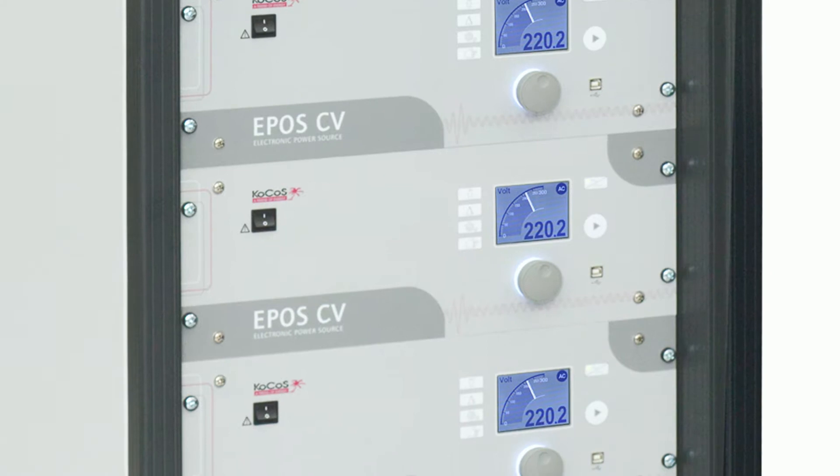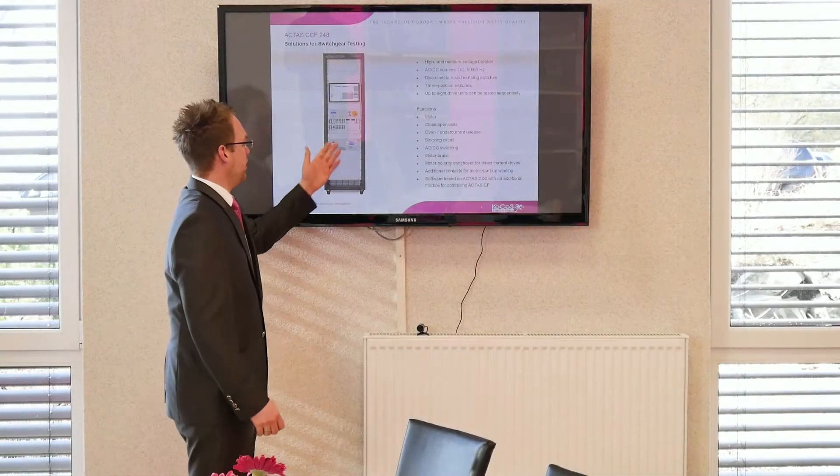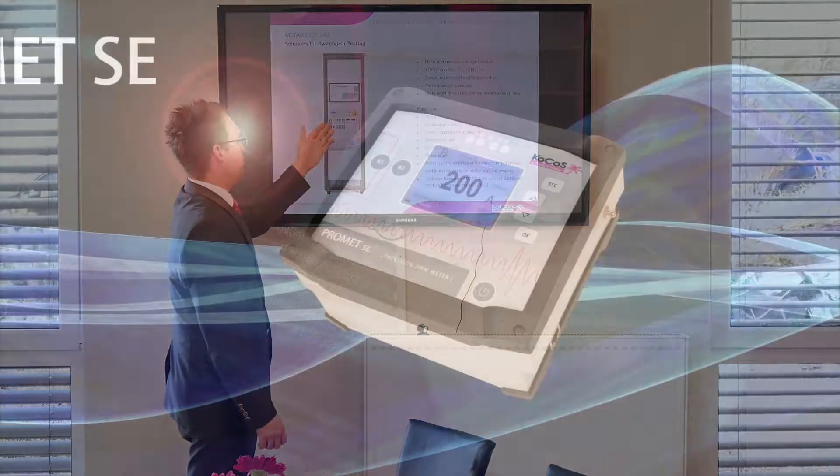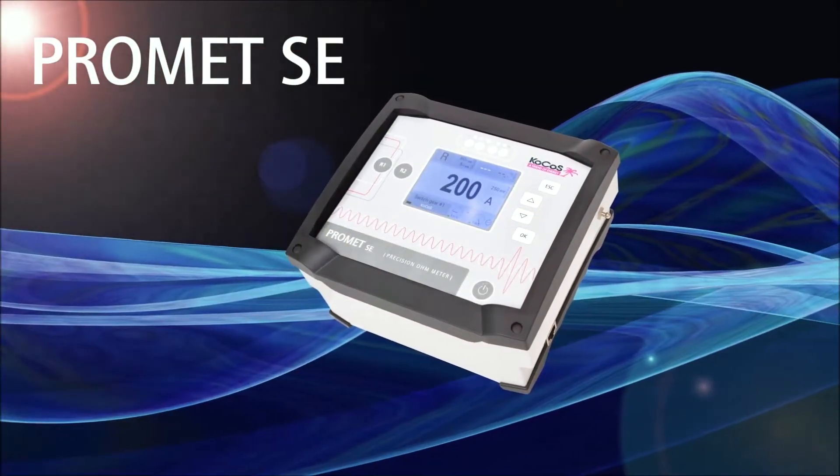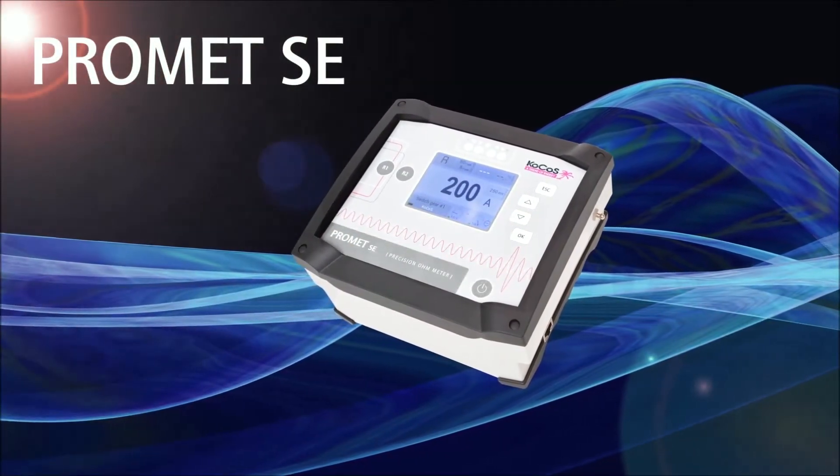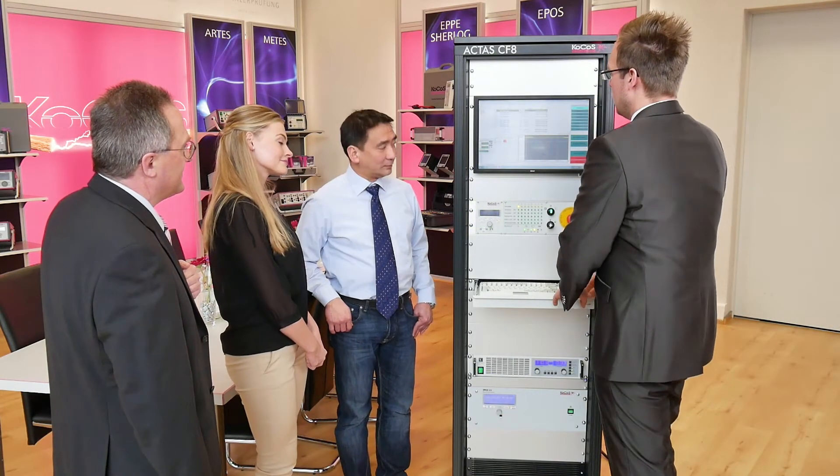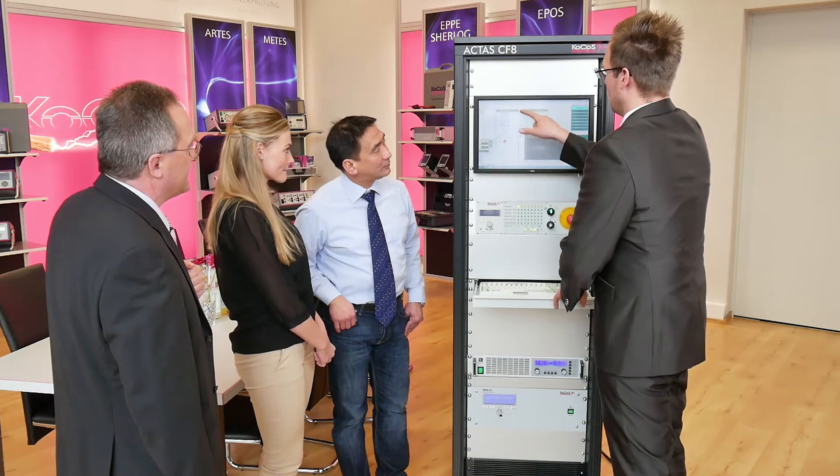The Actis C test systems can also control other devices, such as Promet ohmmeters, for static and dynamic resistance measurements. These additional components are controlled automatically with the stationary test system and the Actis 2.60 professional software.